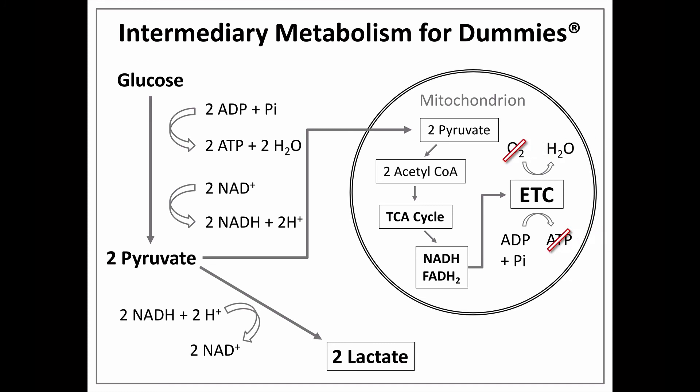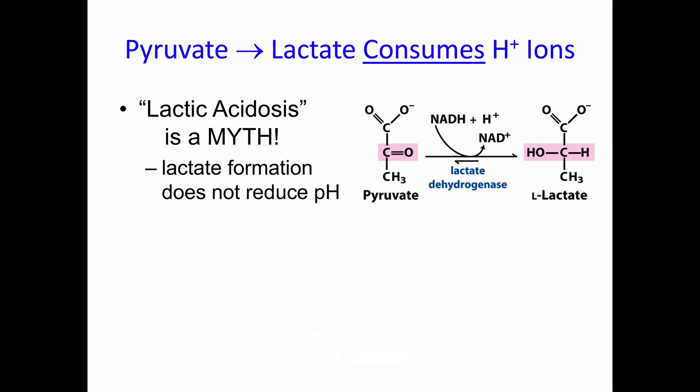But when oxygen isn't available, the electron transport chain shuts down and we stop making ATP efficiently. We still need to make some ATP from glycolysis, even if it's inefficient, and we're accumulating NADH — meaning we're also running out of NAD+. In order to allow glycolysis to continue, we need to convert NADH back into NAD+, so the NADH produced in glycolysis reduces pyruvate into lactate. Note, though, that the reduction of pyruvate into lactate consumes H+ ions and therefore, if anything, reduces the amount of acid.